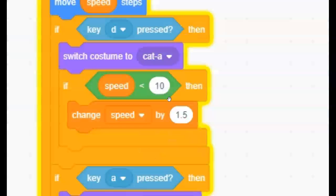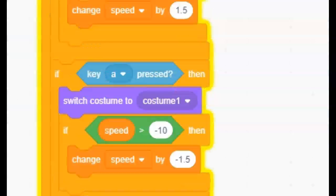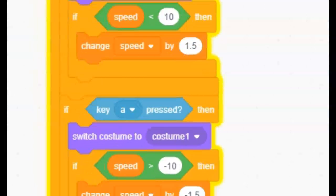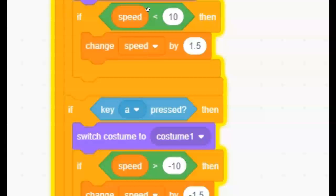If speed is less than 10, then change speed by 1.5 inside the D key.